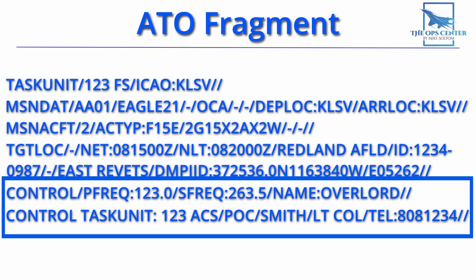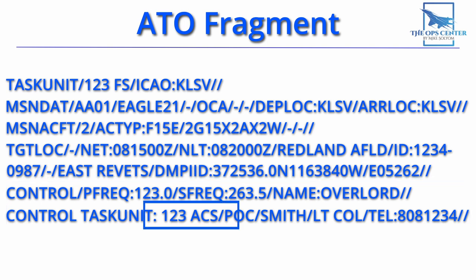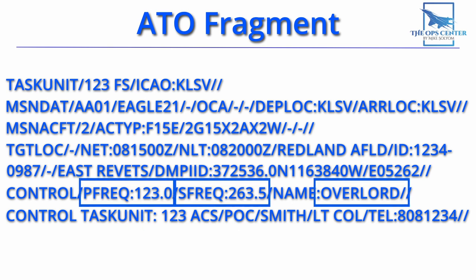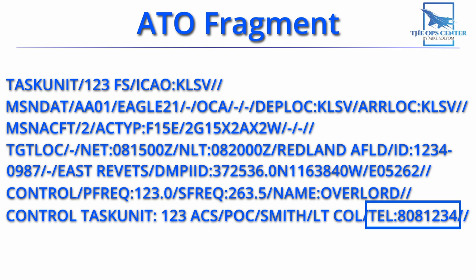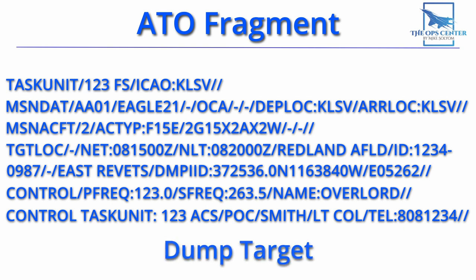Lastly, we have the contact information for the controller for this mission, which will be from this air control squadron. We have radio frequencies and a call sign mentioned here, as well as a telephone number in case the F-15 crews want to speak directly with them before the mission starts. In this fragment we have just one target, but it's not uncommon for a secondary target to be added in case the primary can't be serviced for some reason. You might hear this referred to as a dump target.